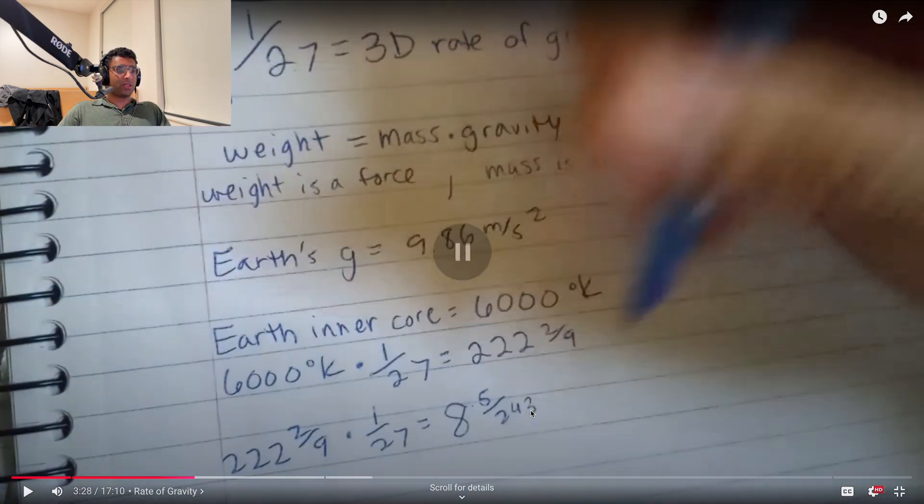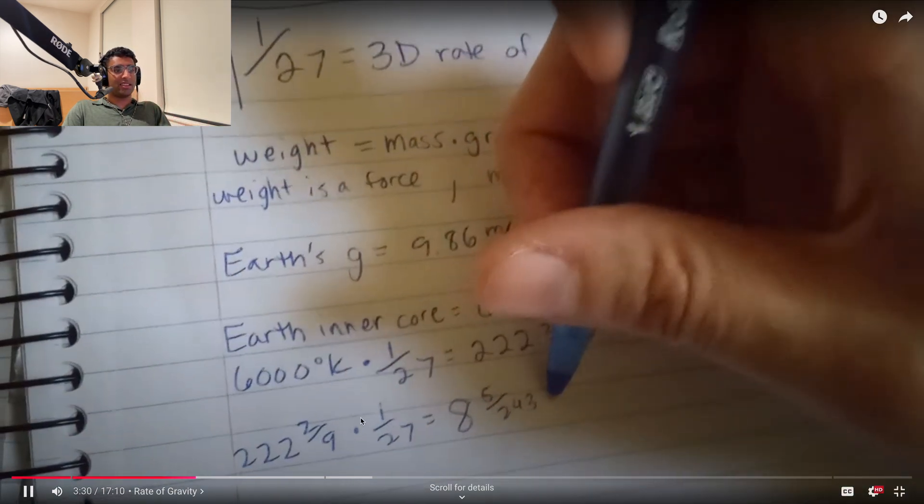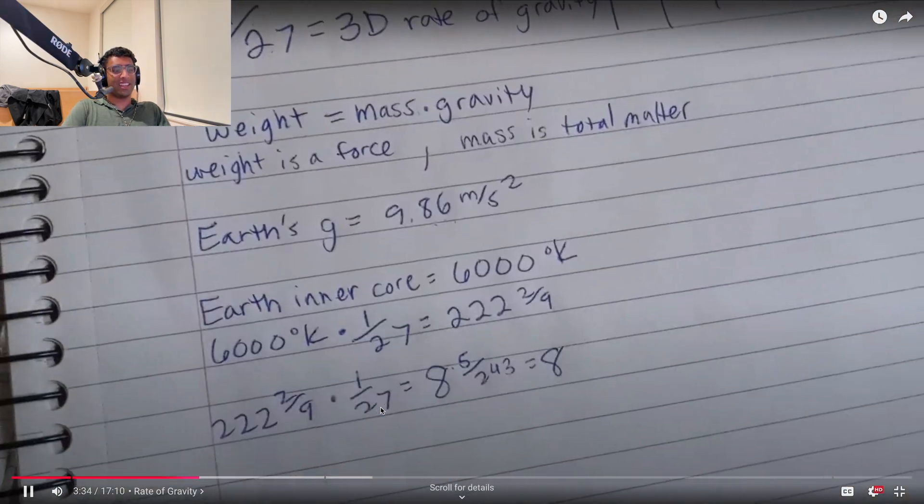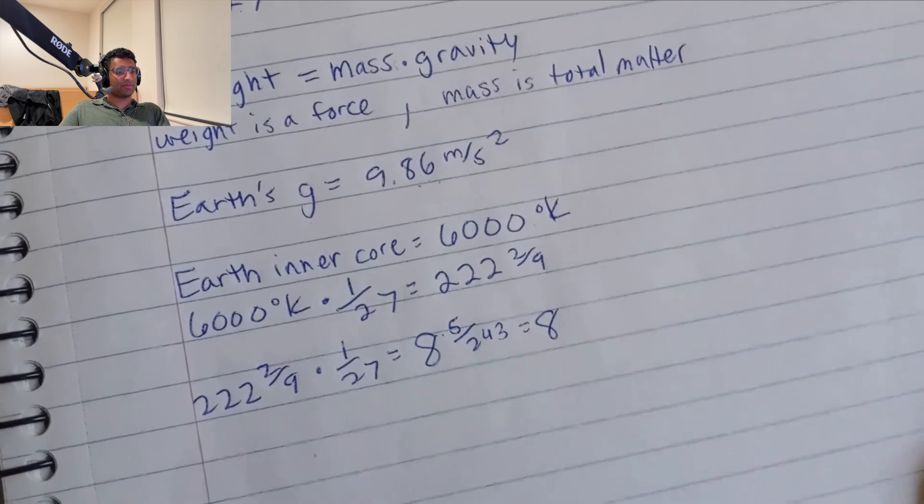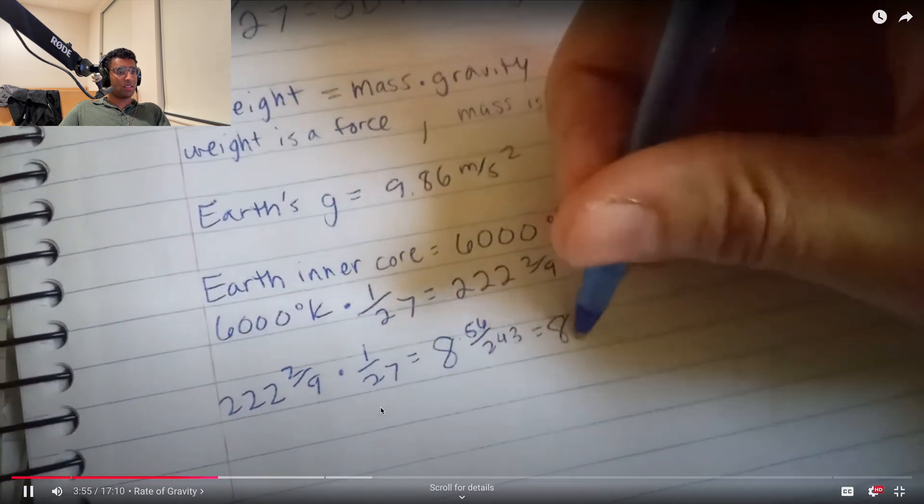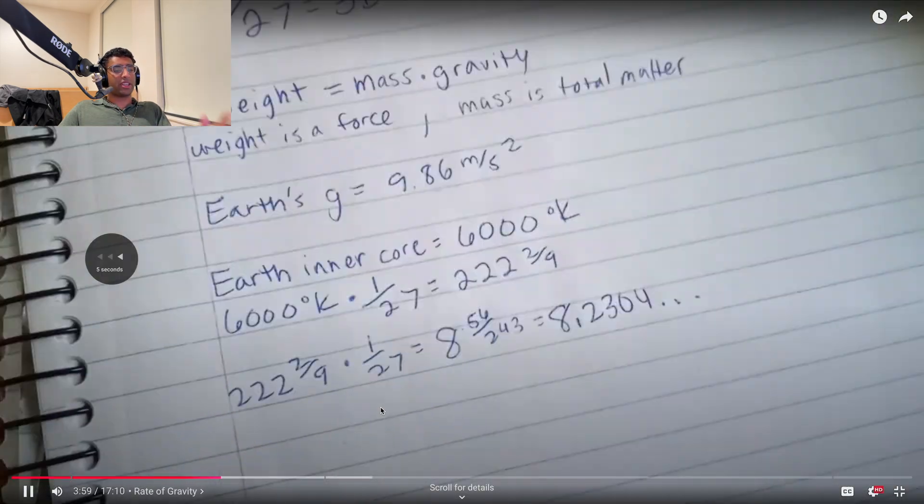So this is the result of him multiplying 6,000 Kelvin as the Earth's inner core temperature. And he does this multiplication twice. Nice. And this is the even crazier part for you. 1 to the 43rd, which is just that 8.2304 core. Okay, here we go.